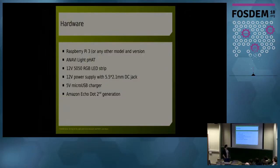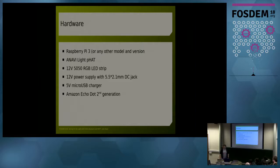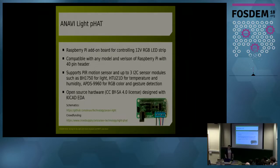That's the demo. You're probably wondering how it works. It's a very simple demo but it includes several open source projects as well as a bunch of hardware. Obviously there's a Raspberry Pi 3. I have designed an open source hardware add-on board for Raspberry Pi 3 to control the RGB lights. I'm also working on another open source hardware board for doing the same thing with a microcontroller. I have an RGB LED strip, a 12-volt power supply for the RGB LED strip, another standard power supply for Raspberry Pi, and an Amazon Echo Dot for the Alexa integration.